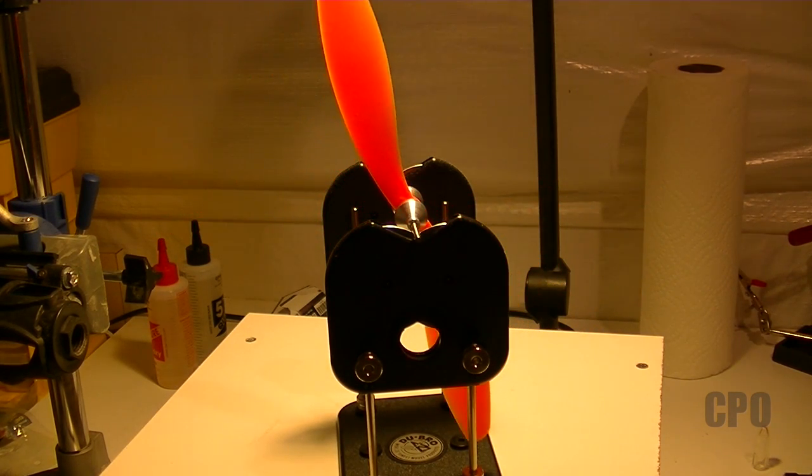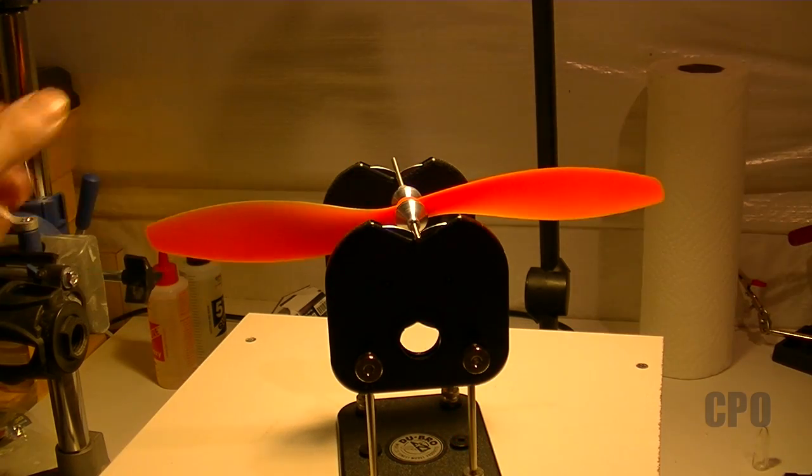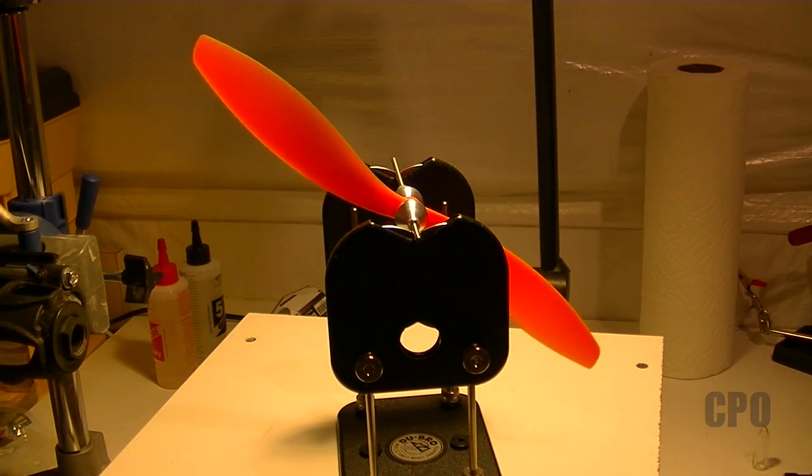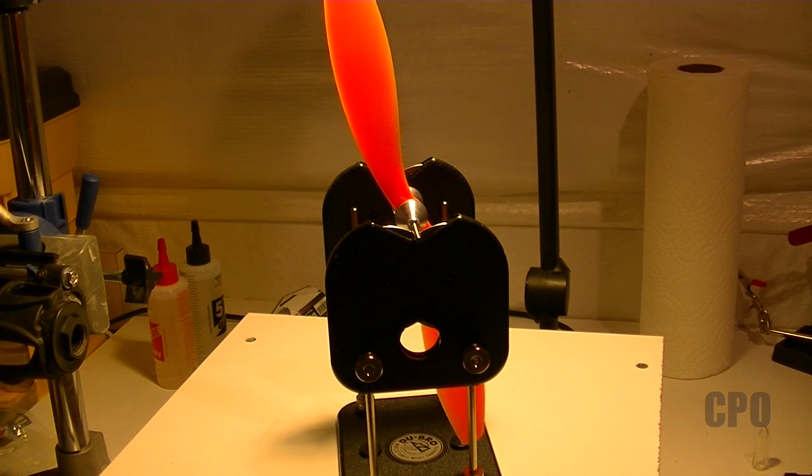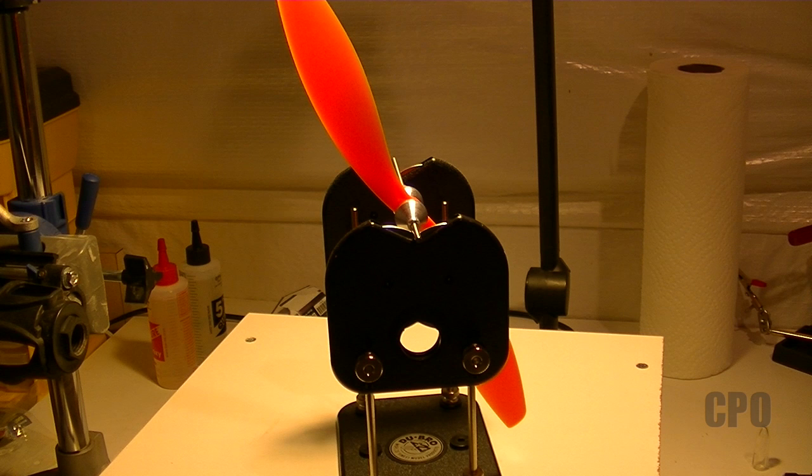So the first thing I look for when I set the prop on the balancer is which side falls towards the bottom and in which direction. In this case, doing it twice even, the blade on the right is the one that drops. This could be a combination of two things, the blade being heavier than the other blade and the hub being out of balance and heavier at that lower point.